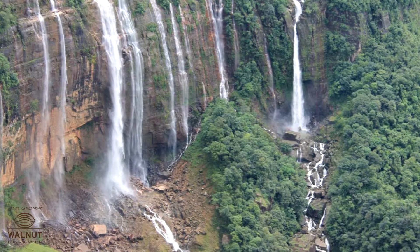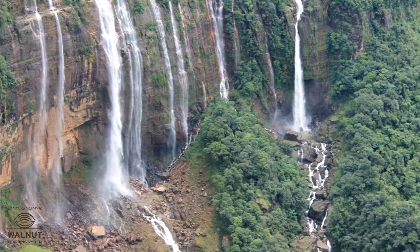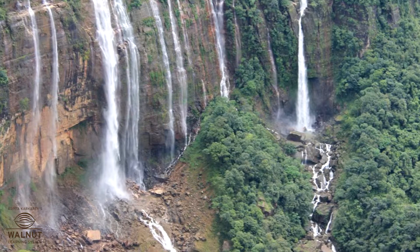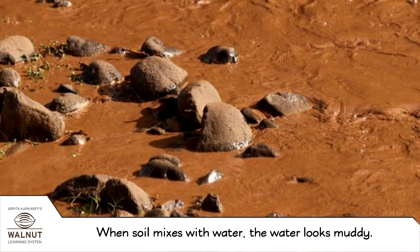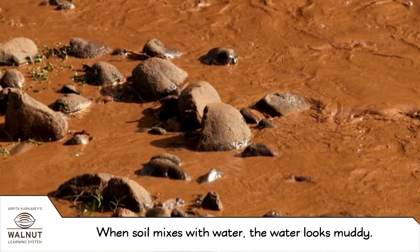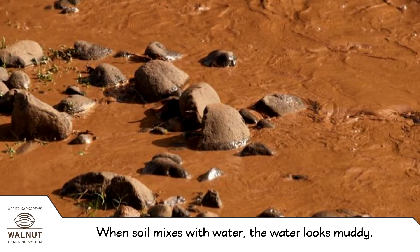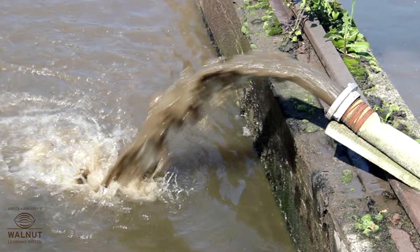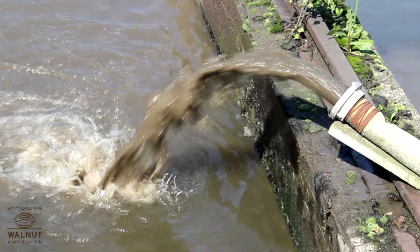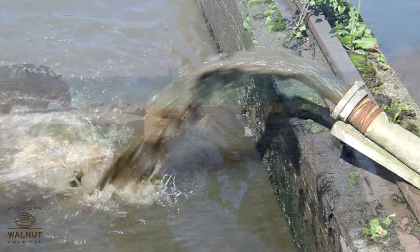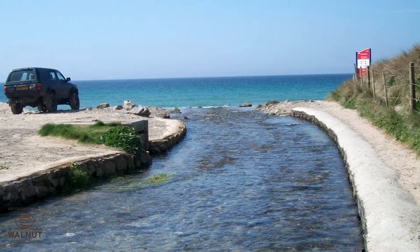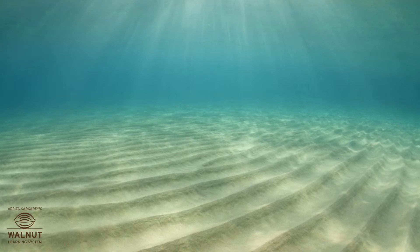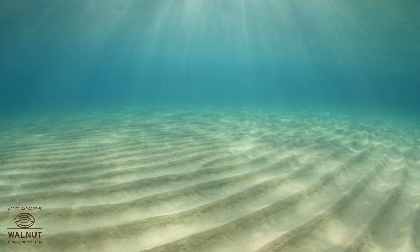Water that falls on the hillslopes rushes downwards and takes the loose soil along with it. When soil mixes with water, the water looks muddy. The water which is full of soil goes into the drains which join the river. The river joins a sea, so all the washed away soil simply lands up at the bottom of the ocean.